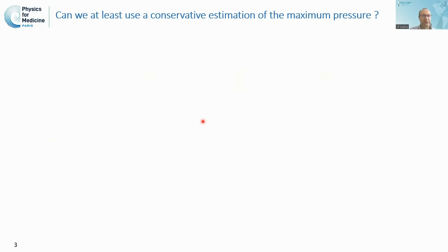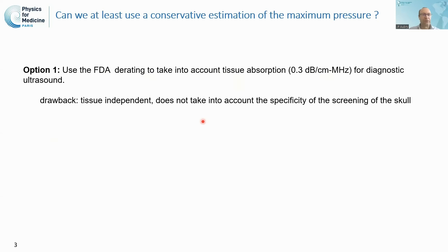The first option is to use the EFTA derating, which takes into account the tissue absorption for diagnostic ultrasound. The drawback is that it is tissue-independent — it is very conservative but does not take into account the specificity of the screening of the skull. So we might consider it conservative, but too conservative.